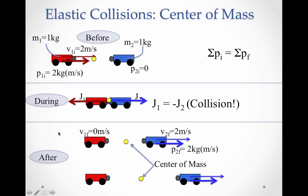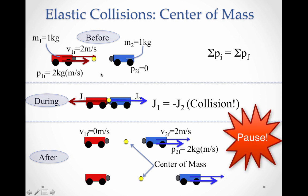Now let's look at center of mass with an elastic collision. This cart is coming in — the balance point is right here between their masses. When they collide and this cart stops while the other keeps going, the center of mass shifts accordingly. Notice that the center of mass was moving and continued to move with a constant velocity the whole time. That's evidence of conservation of momentum — the motion of the center of mass before and after this interaction was the same.